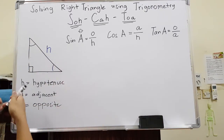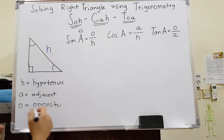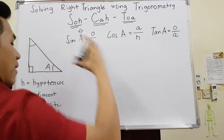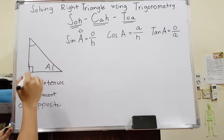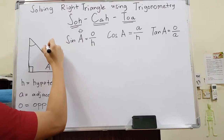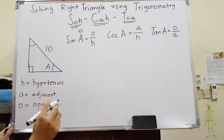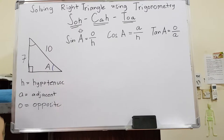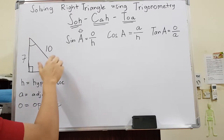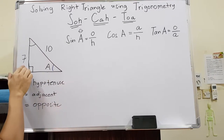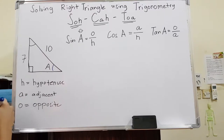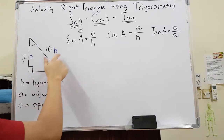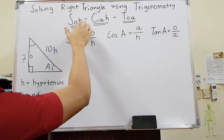Let's start with finding a missing angle. Say angle A is missing, but we have two sides available — let's say seven here. First, label the available sides. The seven is opposite to angle A, and the other given side, ten, is always the hypotenuse. So we have O and H, which means we use sine.